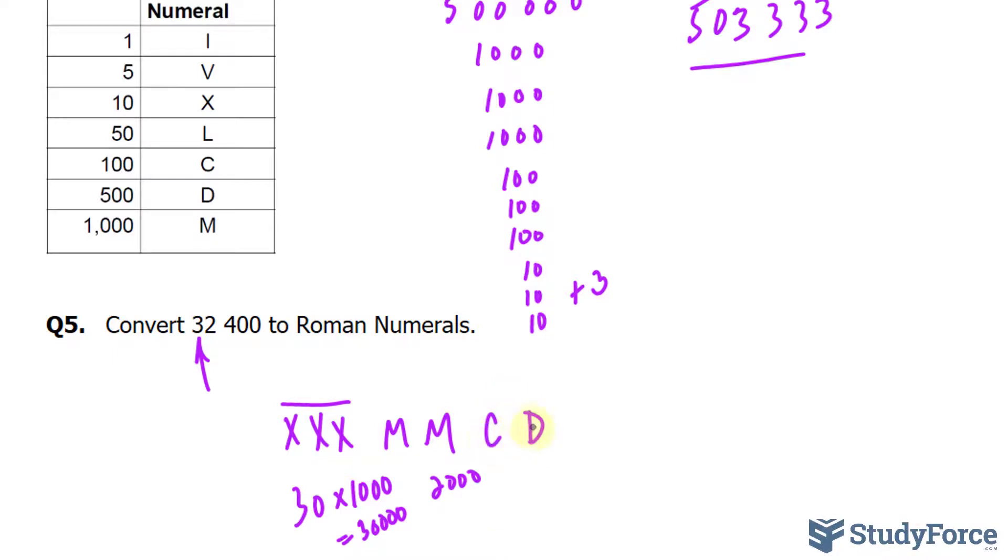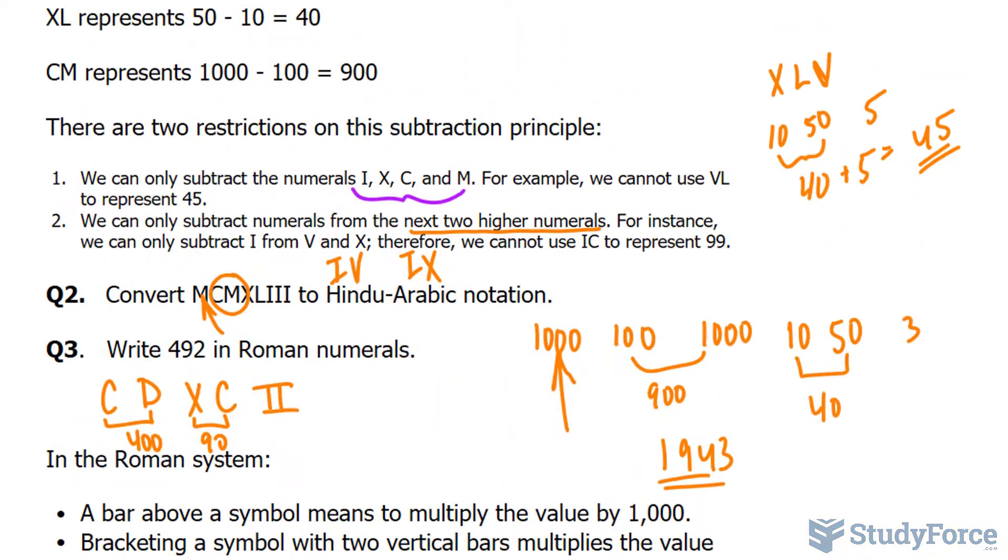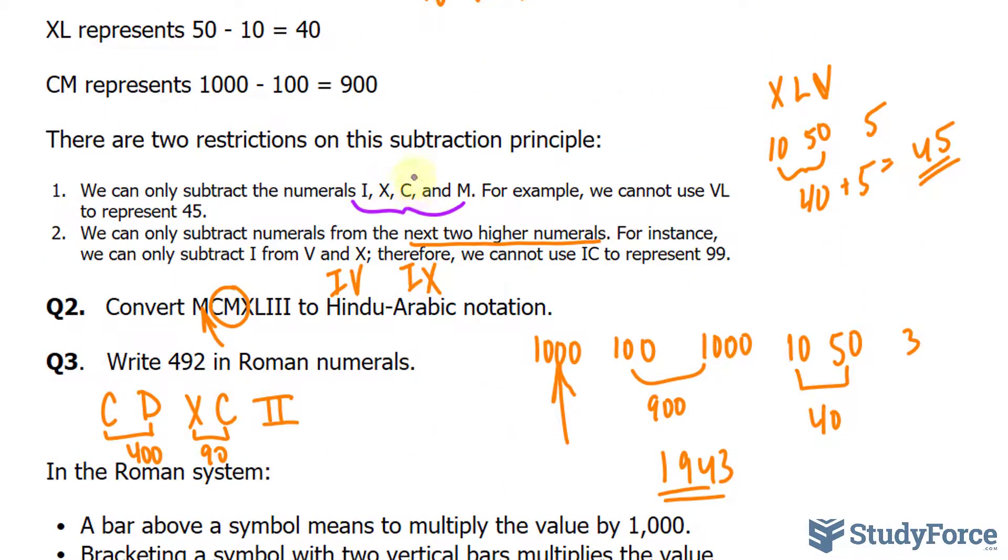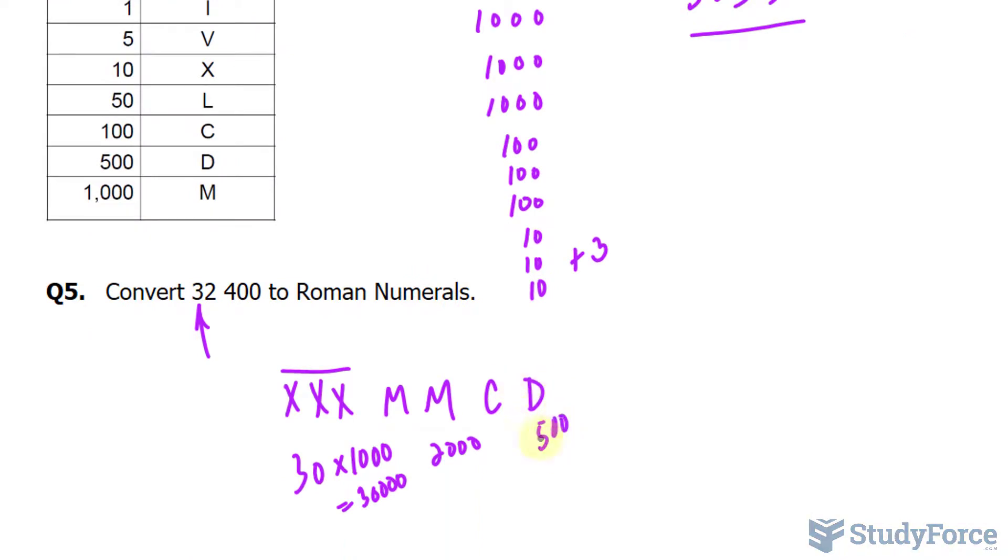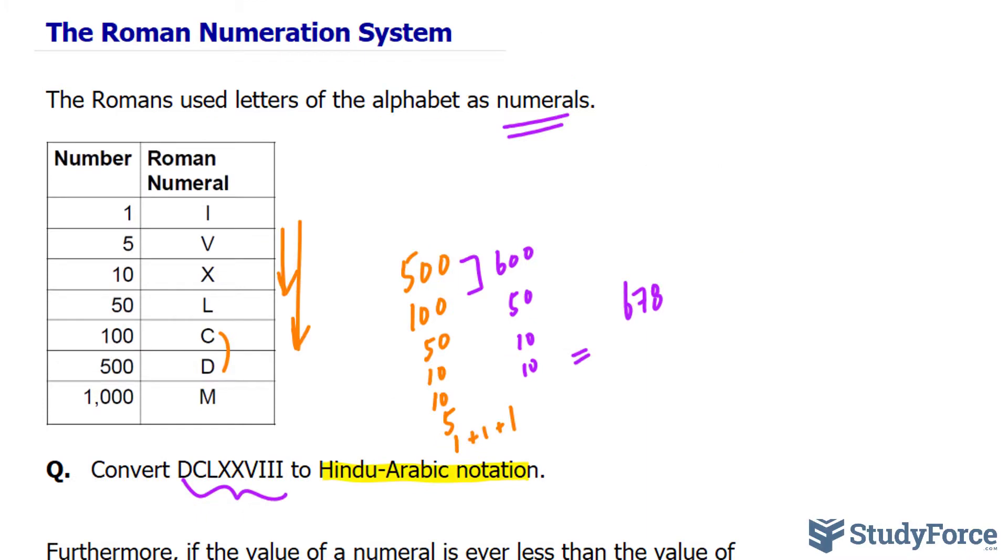And the 400 can be done by writing down C, D next to each other. This is 100, and that's 500. If we use I, X, C, M, we have C. We subtract 500 and 100 together to make 400. So triple X with this bar at the top encompassing all three of them. Double M, C, D is 32,400. So there you have it. Those are some examples of the Roman numeration system.